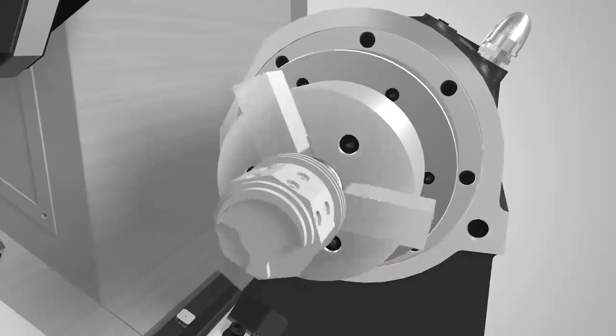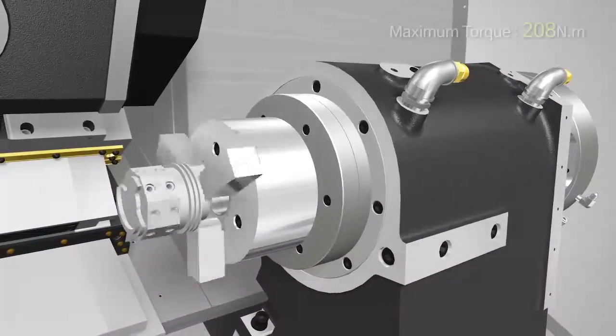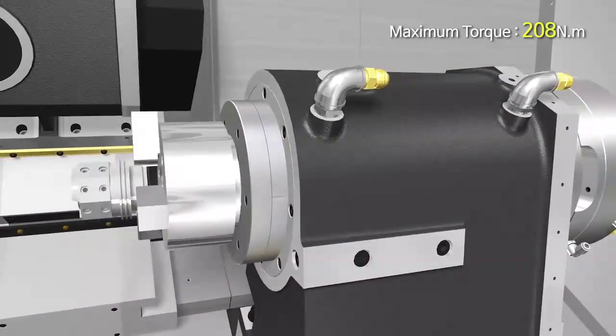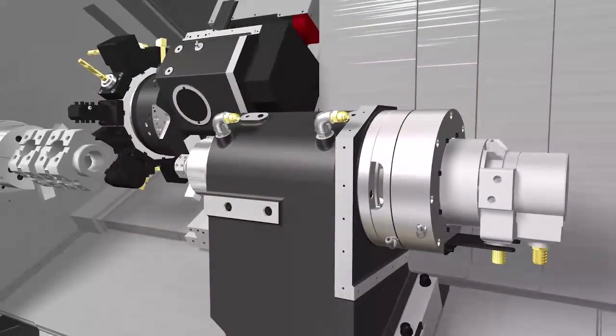The built-in type sub-spindle can hold 6-inch chuck and produce torque up to 208 Nm, which is 74 Nm higher than competitors. With the sub-spindle, productivity is increased.